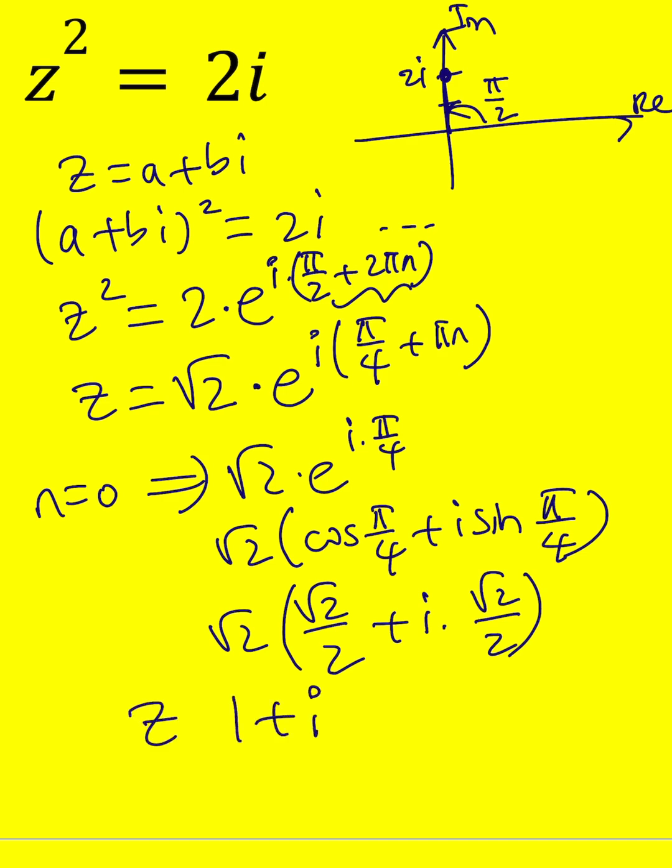So one of the z values is going to be 1 plus i, which is one of the square roots of 2i, and the other one is just going to be the opposite because if you square them you get the same thing. And that's it. See you next time.